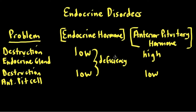In both deficiency scenarios, the patient would experience symptoms of low hormone levels — low sex steroids, low thyroid hormone, or low cortisol. Without measuring the anterior pituitary hormone level, we can't easily determine the source of the problem. It's critical to have both values to figure out where the problem lies.